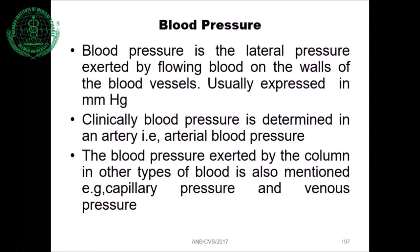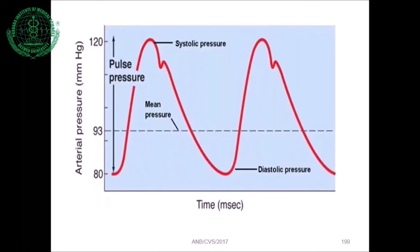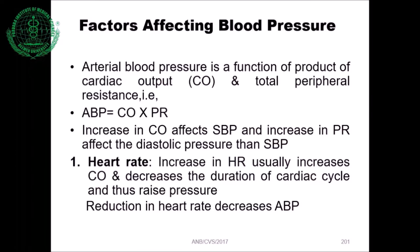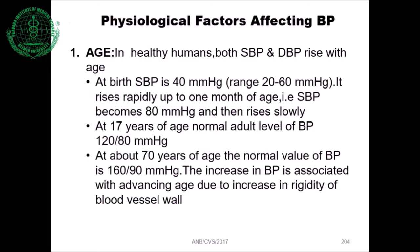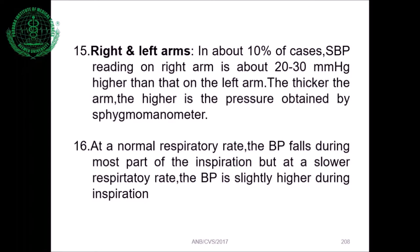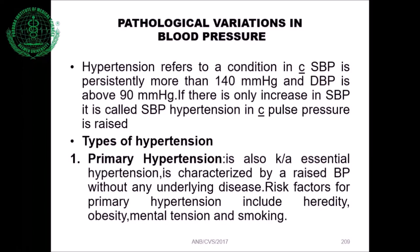We have also seen four types of blood pressure with their normal ranges: systolic blood pressure, diastolic blood pressure, pulse pressure, and mean arterial pressure. We also studied how blood pressure varies at different levels of the vascular system — maximum at the left ventricle and minimum in capacitance vessels. We also covered factors affecting blood pressure: physical factors, physiological factors such as age and sex, respiratory rate, and pathological variations including hypertension.